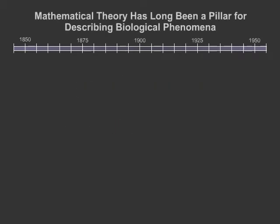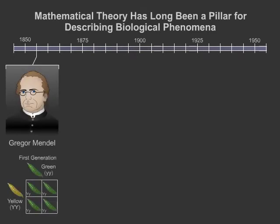Mathematical theory has long been a pillar for describing biological phenomena. For example, Gregor Mendel, considered the father of modern genetics, formulated the existence of alleles by observing that plant properties appeared to obey an implausible ratio of three to one, decades before the discovery of actual chromosomes.